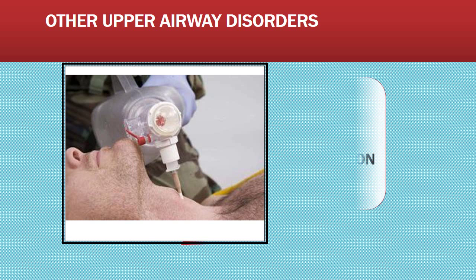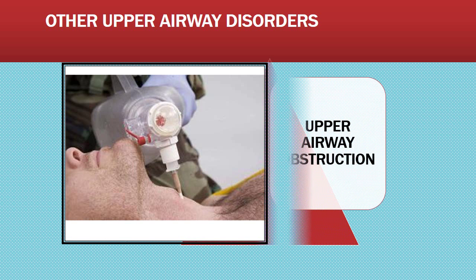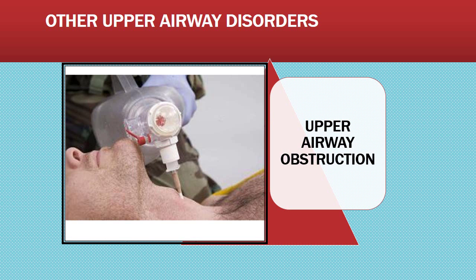A cricothyroidotomy is a stab wound at the cricothyroid membrane between the thyroid cartilage and the cricoid cartilage ring, performed in an emergency to open or access the airway.